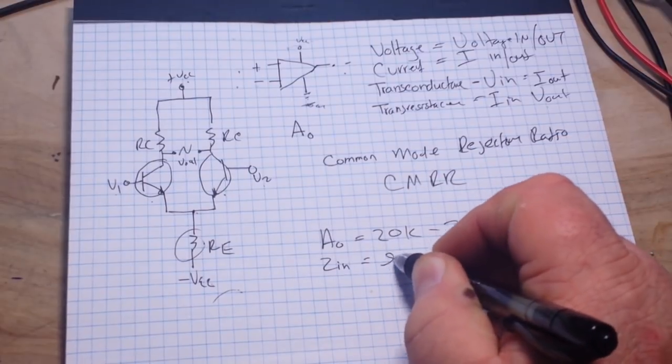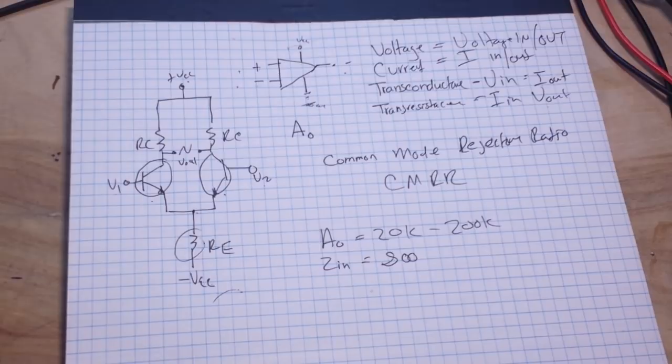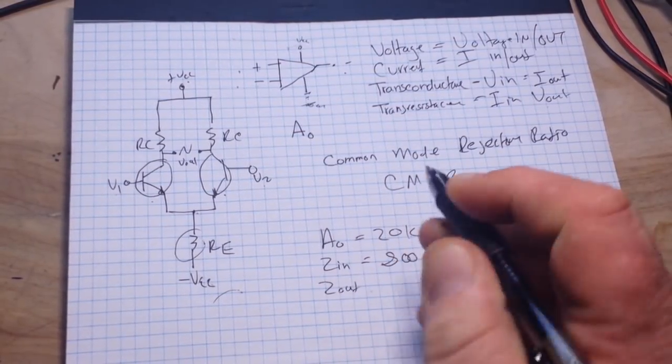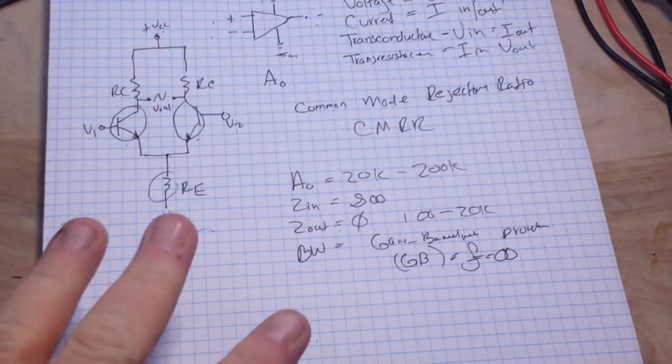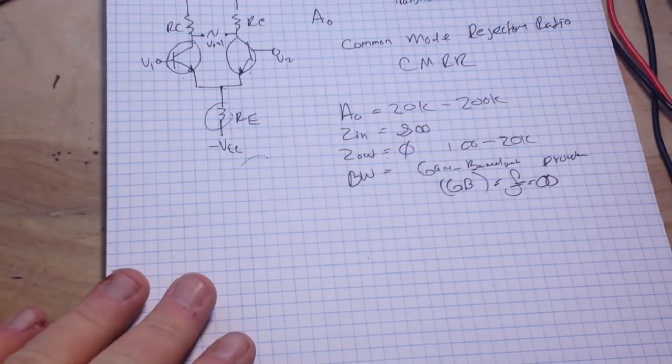I mean, it's generally infinite - I didn't draw my symbol very good, did I? - almost infinite, but there are leakage currents from a few picoamps also. Now our output impedance can be a little bit more different.